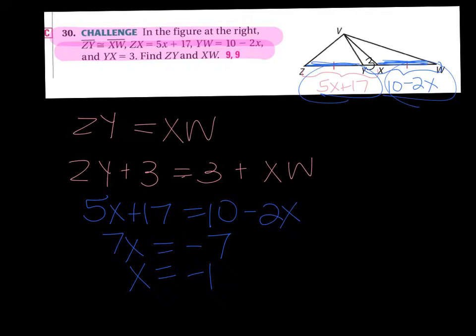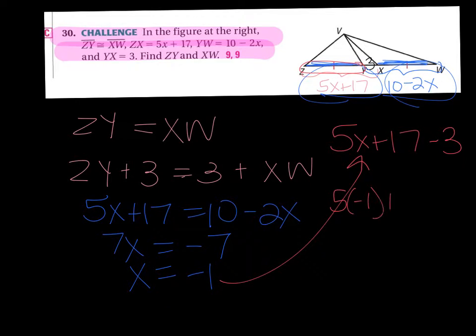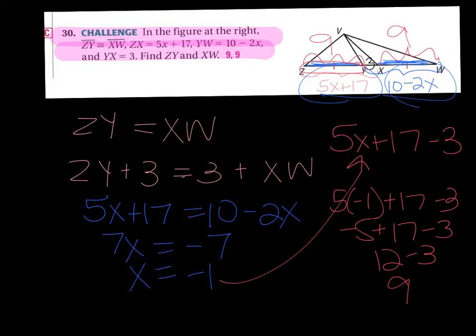So if we added the same number to both sides of the equation, are they still equal? Yeah. So I can take 5X + 17 and set it equal to 10 - 2X. And then I would add the 2X, subtract the 17, and I'd get X equals -1. But the question isn't what X is, it's what is ZY.